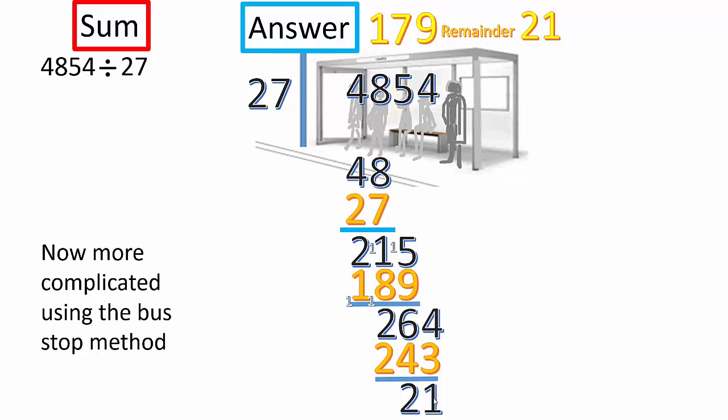So, the sum, 27 into 4854. The answer is 179 remainder 21. Remainder means what's left over.